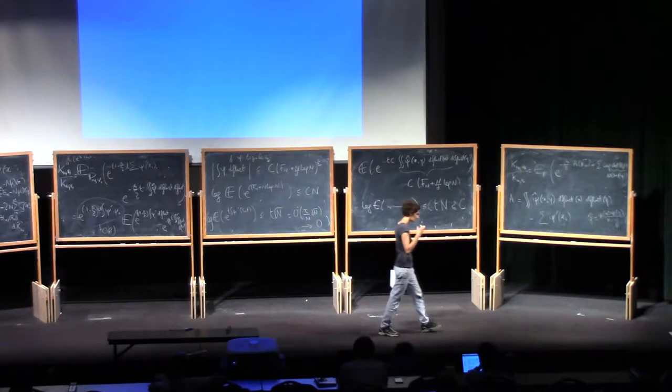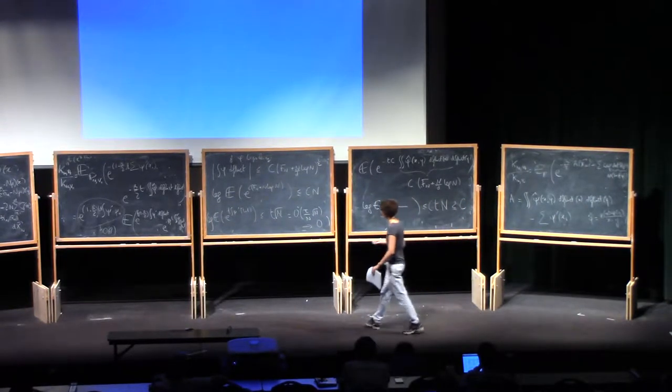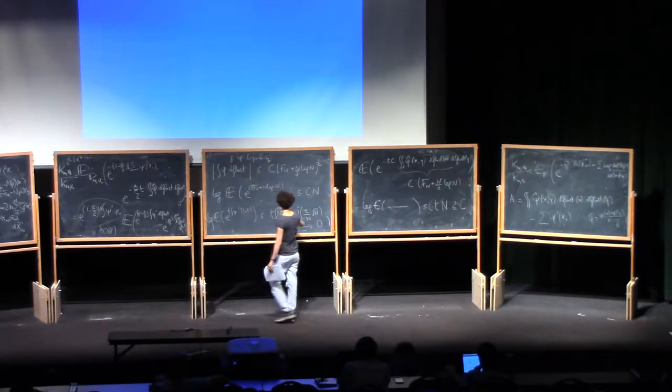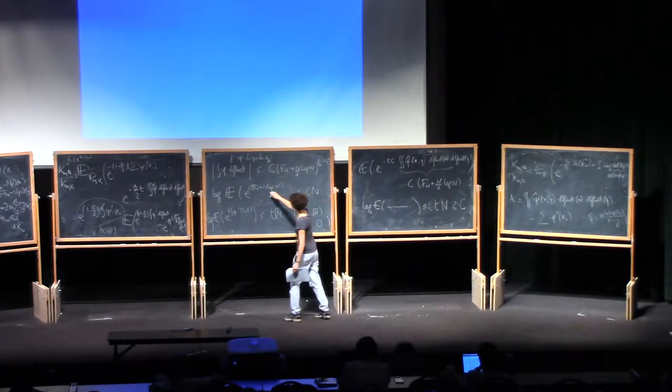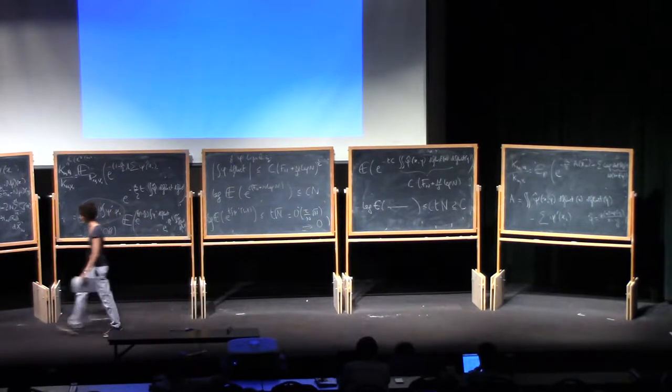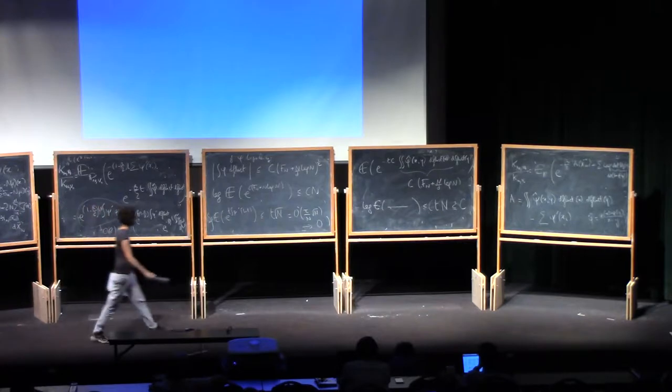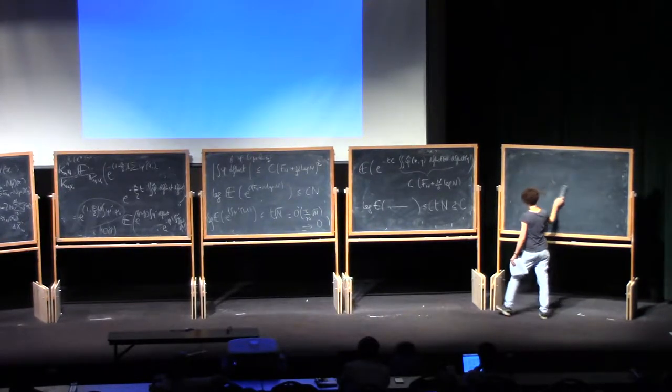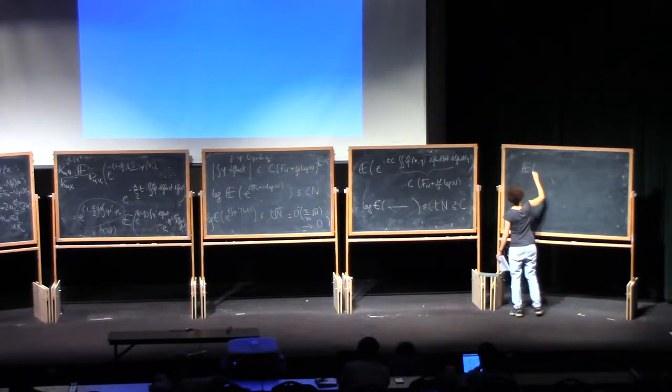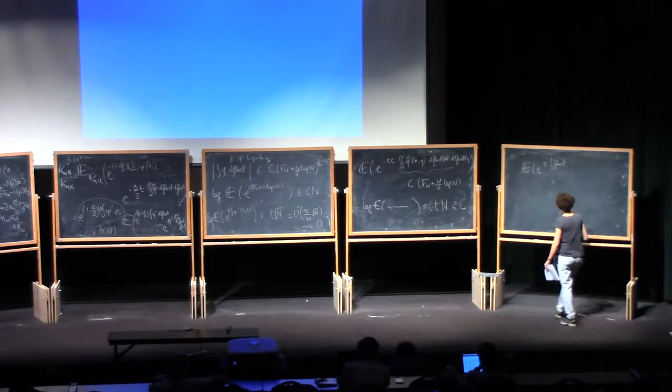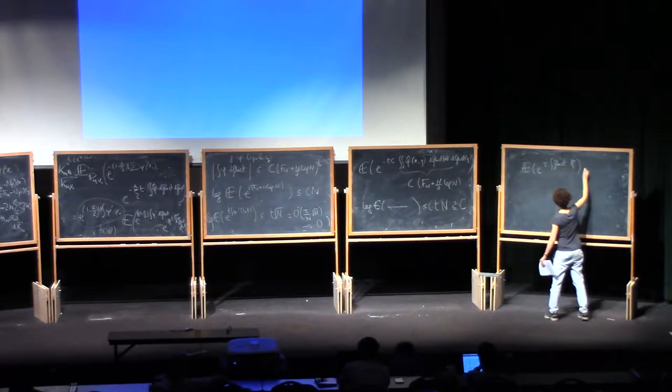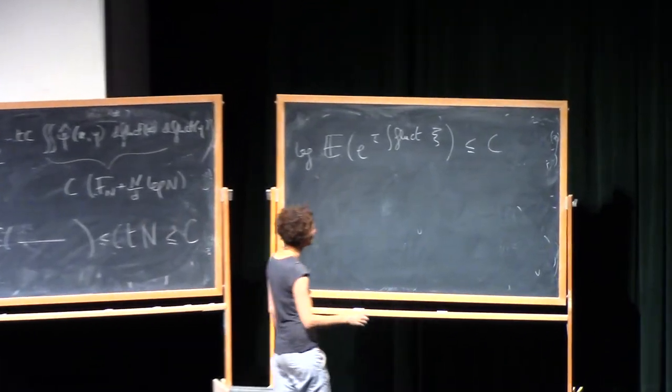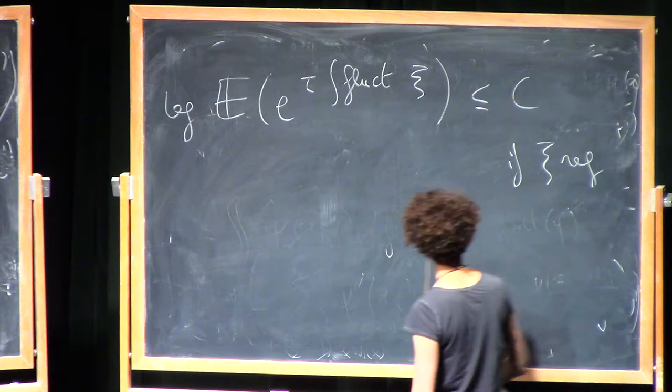But so that means I control the exponential moments of any fluctuation. Instead of controlling it here by n, if the test function is regular enough, I have upgraded this into a control by c. So this is, this is not good, but what I have upgraded, and I should find my eraser. I have upgraded things into saying that the exponential moments of something like this thanks to the computation of this ratio of partition functions is bounded by a constant if c is regular enough.